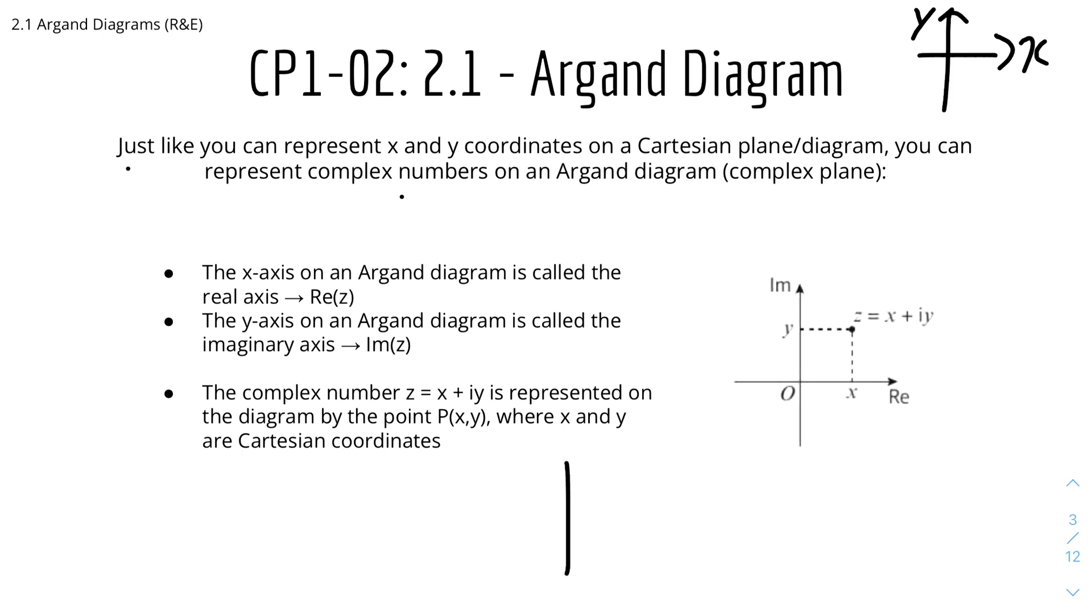The complex number z equals x plus iy is represented on the diagram by the point P(x,y), where x and y are the Cartesian coordinates. So let's say if we were to plot 2 plus 3i, that means 2 will be on the x coordinate and the y coordinate is 3.